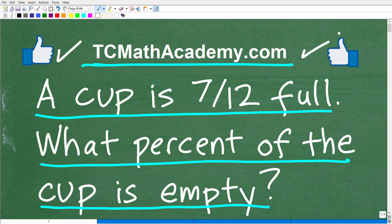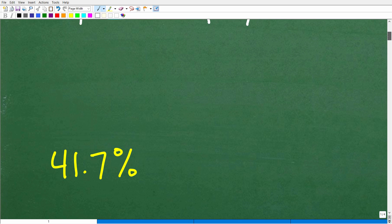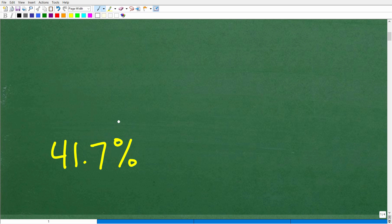Okay. So pretty straightforward problem. And again, we want to make sure we understand the question. The question is what percent of this cup is empty? And of course, we'll talk more about the question here in a second, but let's go ahead and take a look at the answer. The answer is approximately 41.7%.